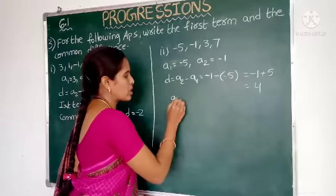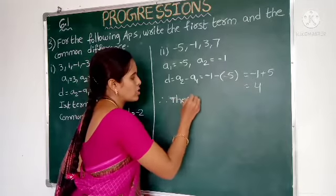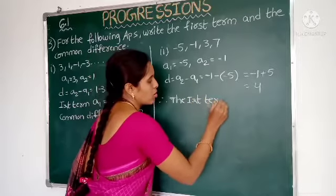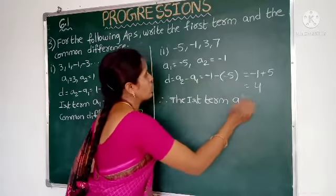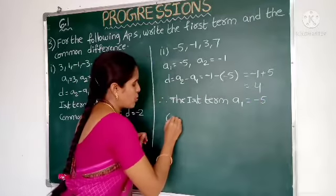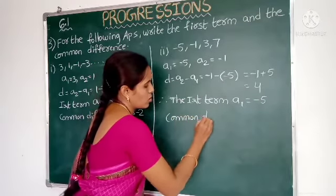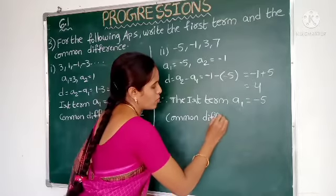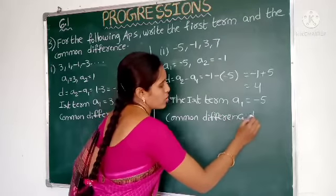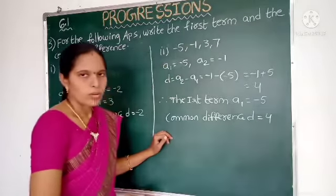Therefore, the first term A1 equals minus 5 and the common difference D equals 4.